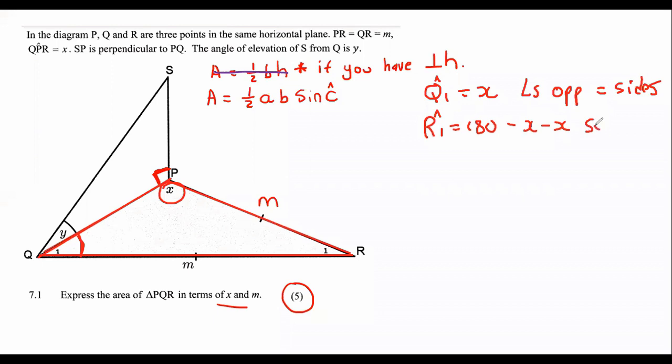And that's just because of sum of angles in a triangle. And so, we can say that angle R1 will be 180 minus 2X.